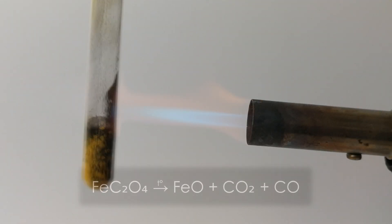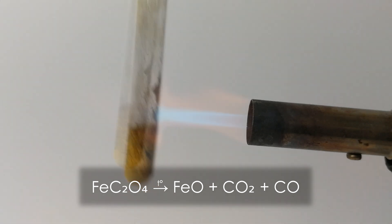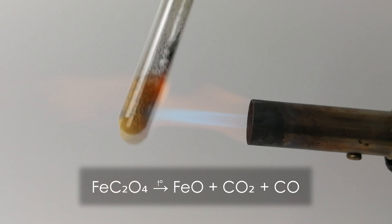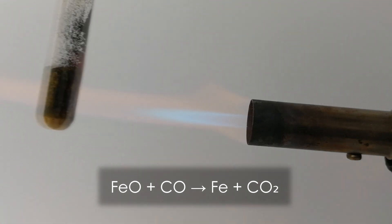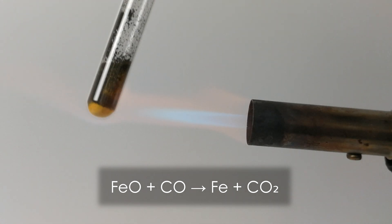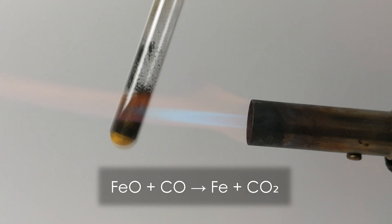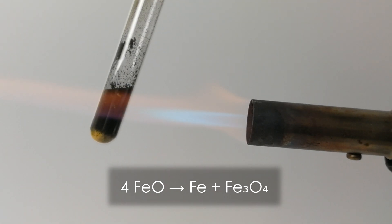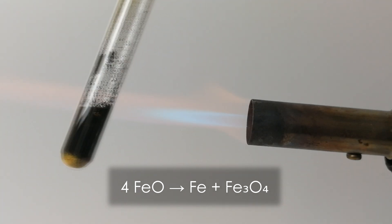Upon heating, ferrous oxalate decomposes to ferrous oxide, carbon dioxide and carbon monoxide. The carbon monoxide partially reduces ferrous oxide to iron metal, forming carbon dioxide. Part of the ferrous oxide can also disproportionate to iron metal and magnetite.